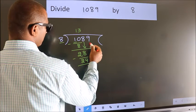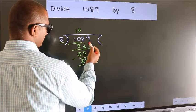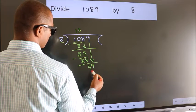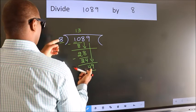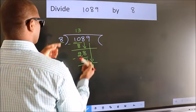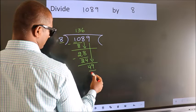After this, bring down the beside number. So 9 down. So 49. A number close to 49 in 8 table is 8, 6, 48.